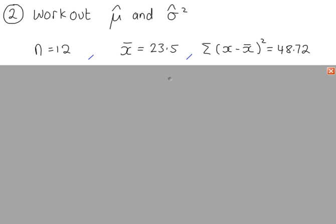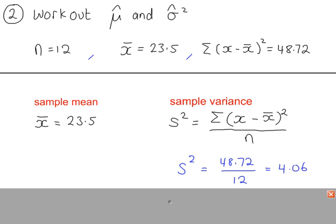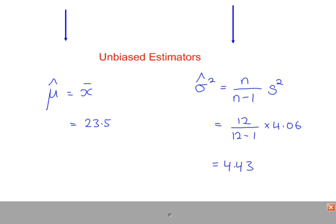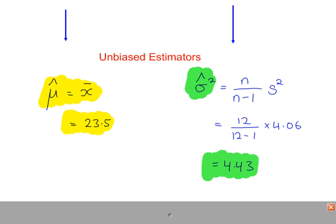Example 2. This time, instead of being given the raw data for the sample, you're given some summarized data values. From these we obtain the sample mean and sample variance, which are used to work out the unbiased estimate of the population mean and the unbiased estimate of the population variance.